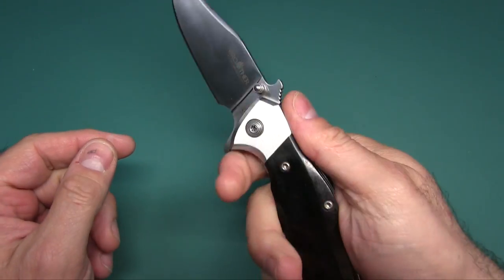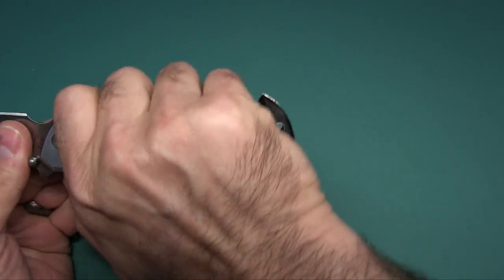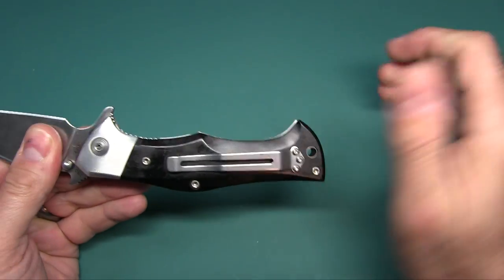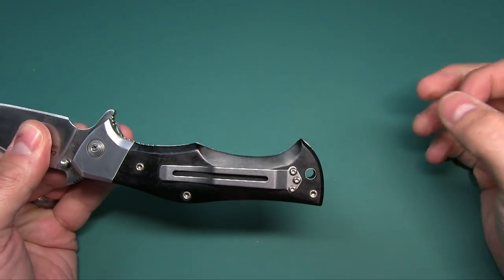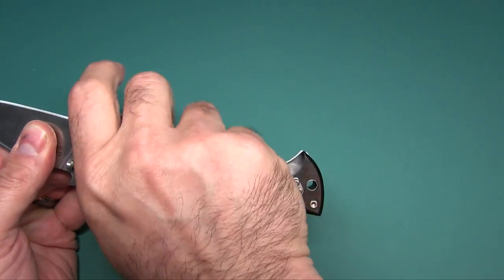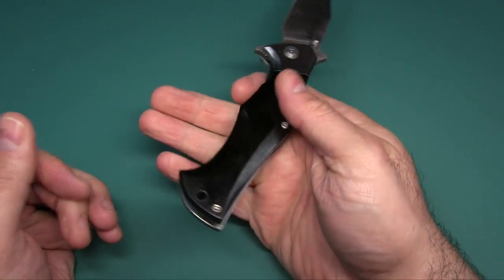Then it rotates down and becomes the guard. You have some jimping up here on the wave, and I'll demonstrate that if you don't know what that is. That all keeps your hand from sliding onto the blade. If you're pulling back, you have a little bit back here to help grab to pull that knife out.